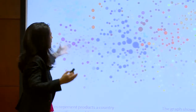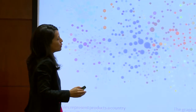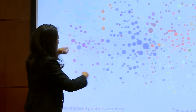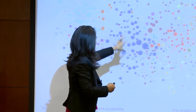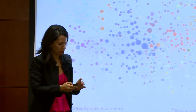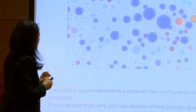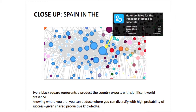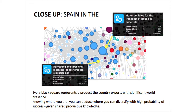Another way to look at it is as a map of capabilities, where similar capabilities are clustered in the products you can produce. If you are a country that produces motor vehicles here, you are also likely to be able to produce harvesting and threshing machines in the future, because it's very close in the product space.